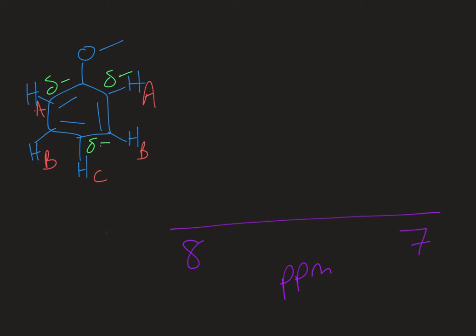I've redrawn my molecule with the protons on it and labeled. There is a plane of symmetry right down the middle of the molecule, so you've got identical HAs and identical HBs across from one another on the benzene ring — they're in an identical chemical environment. I've noted the ortho and para positions with the increased partial negative charge because of that electron donating group. So the ortho and para positions, HAs and HCs, should be more upfield than HBs because they have more electron density around them. That electron density creates an opposing magnetic field making B felt smaller. HA will be the most upfield, it's the closest to the group.